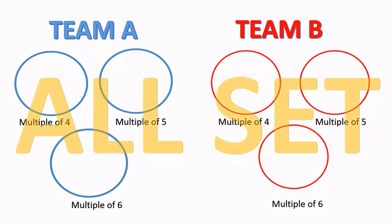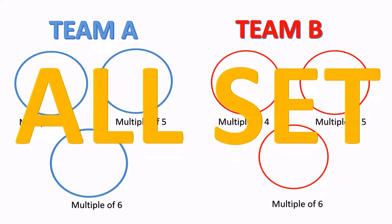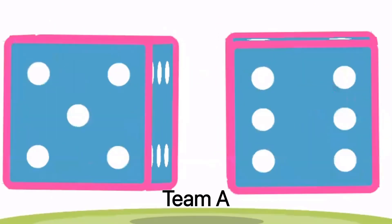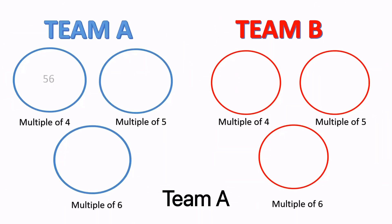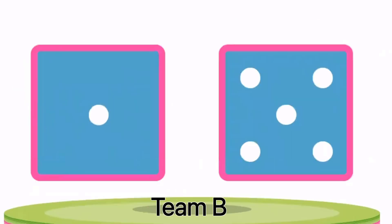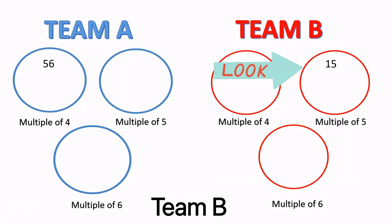We are good to go, so let's play the game. Round one — we will roll the dice. We will write 56 in the circle of four as a multiple of five.